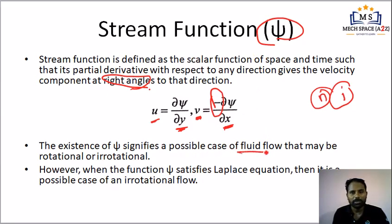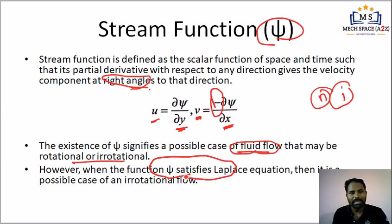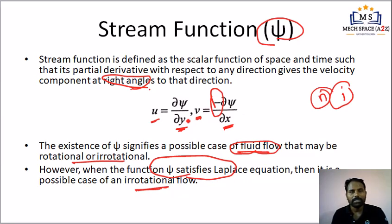Steady incompressible flow — flow is possible. If the stream function exists, that is irrotational flow. If phi exists, it is irrotational. If it exists, it is steady incompressible flow. The stream function — if it exists and satisfies the Laplace equation, that is irrotational flow. The stream function's existence indicates irrotational flow.